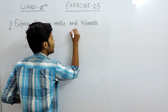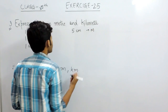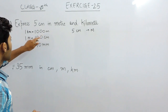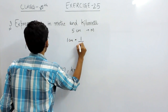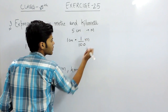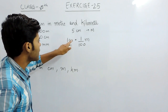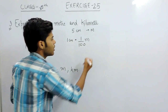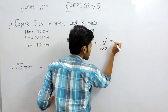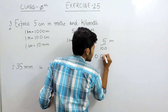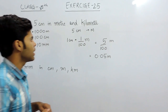In this question it is given to us 5cm and we have to convert it in meter. From here you can see that 1cm is equal to 1 upon 100m. We know that this is cm and we can replace this cm by 1 upon 100m. So it will be 5 upon 100m, that will be 0.05m, and this is the answer of part 1.